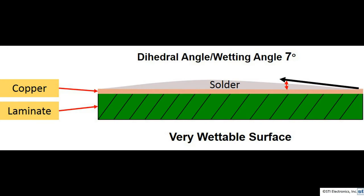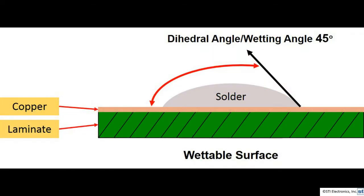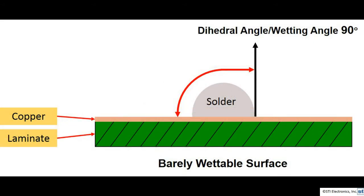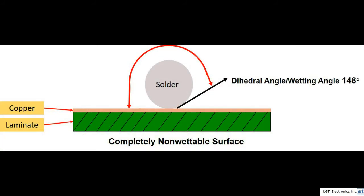In this example, we are able to measure the contact angle and we see that we have a very low angle of approximately 7 degrees. Low contact angles indicate the surface was easier to wet. In this example, we measure the contact angle at 45 degrees — this surface was not as easy to wet as the previous example. For this example, we have an angle of approximately 90 degrees, which is the maximum acceptable angle and indicates that it was more difficult to get the solder to wet this surface. This example has an angle of 148 degrees and 1 minute 3 seconds, or a decimal equivalent of 148.0175 degrees — this definitely exceeds the 90 degree maximum.